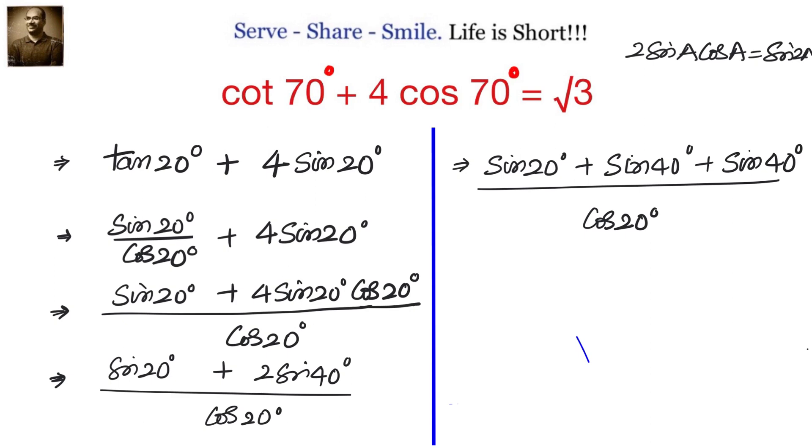We can apply the formula that sin c plus sin d equals 2 sin of c plus d by 2 times cos of c minus d by 2. So it will become